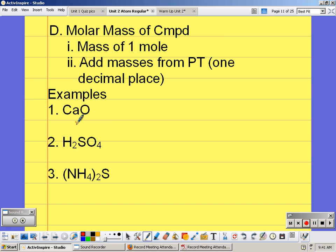So calcium's molar mass is 40.1, plus oxygen's molar mass, 16.0. So if I was to add that together, calcium oxide has a molar mass of 56.1 grams per mole.